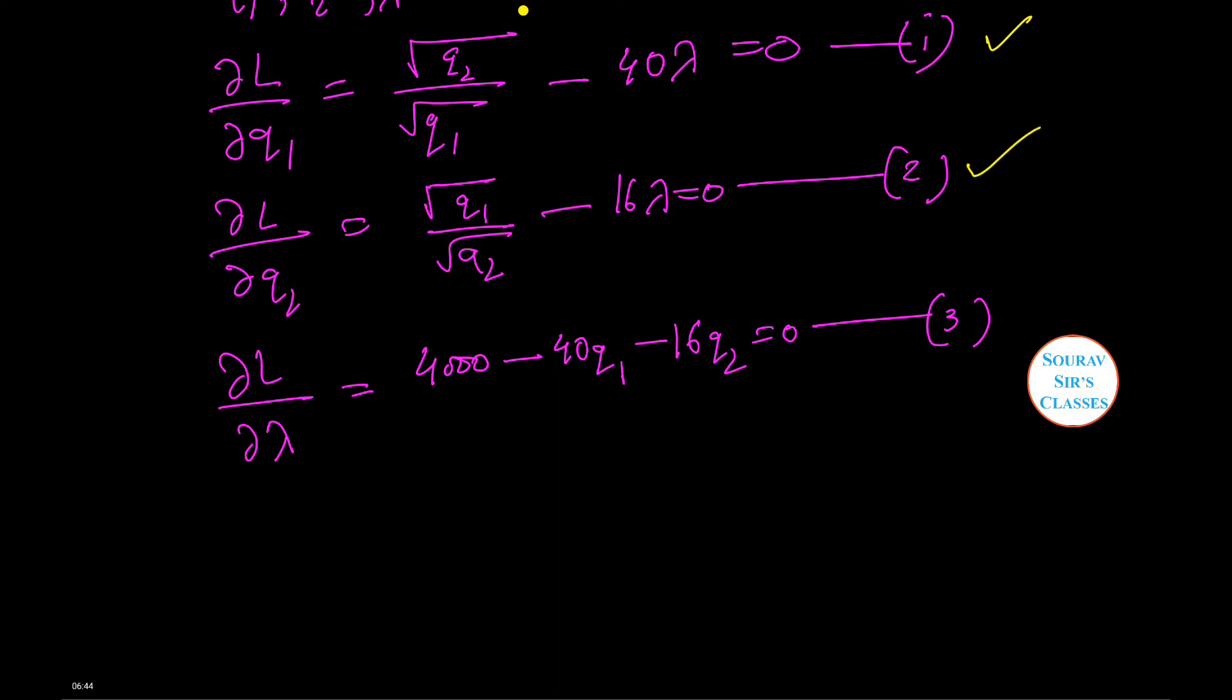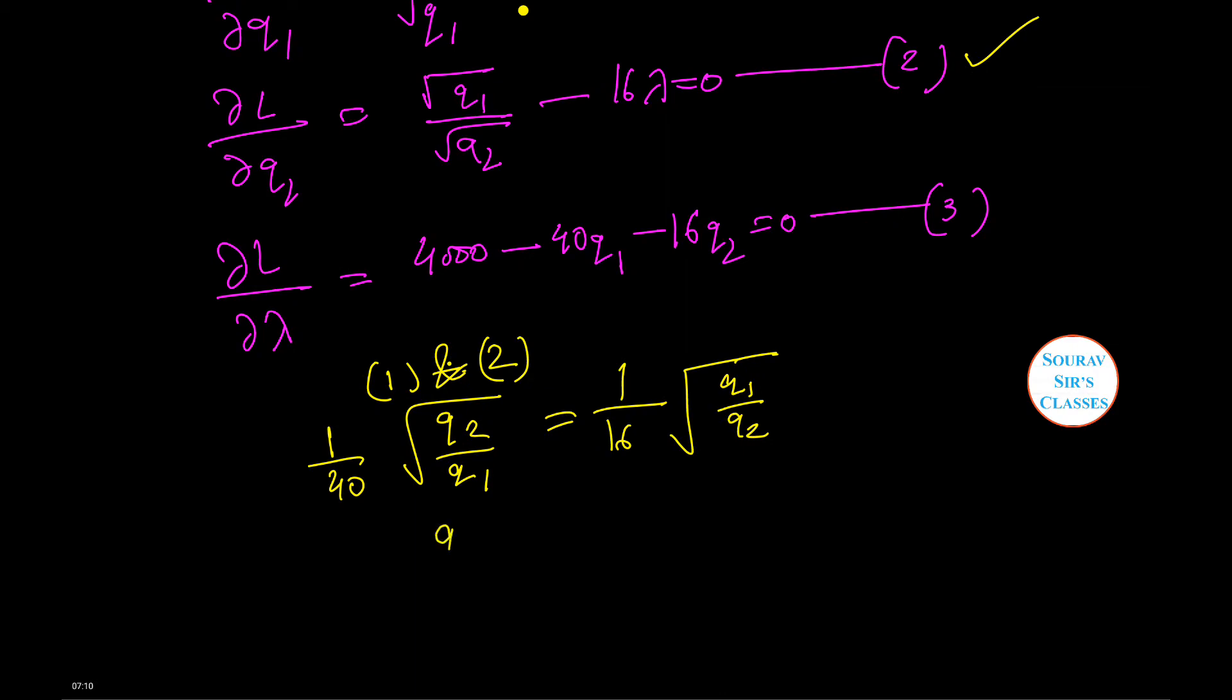Now let us take the first equation. Upon solution of equations 1 and 2 we have 1 by 40 root Q2 by Q1 equals 1 by 16 root Q1 by Q2. Cross multiplying we have Q2 equals 5 by 2 times Q1.